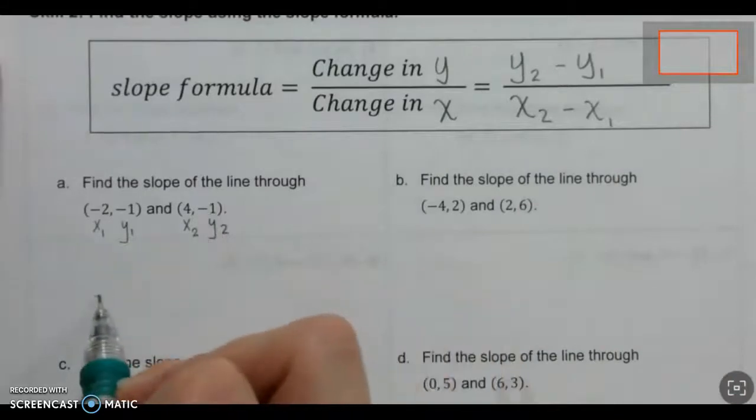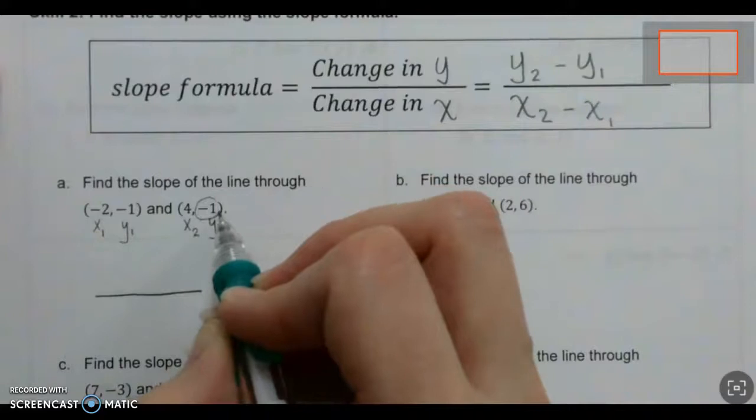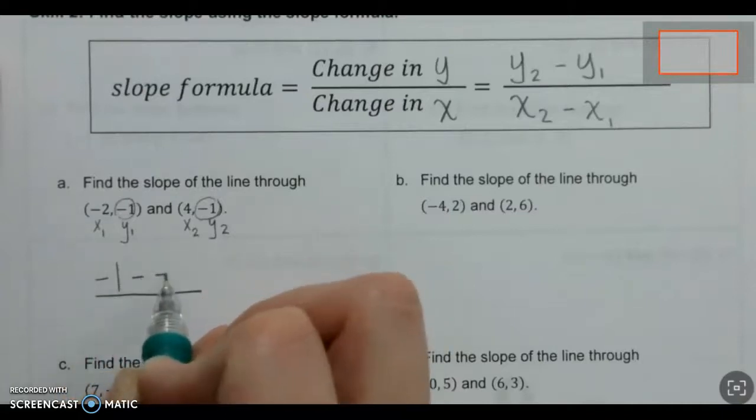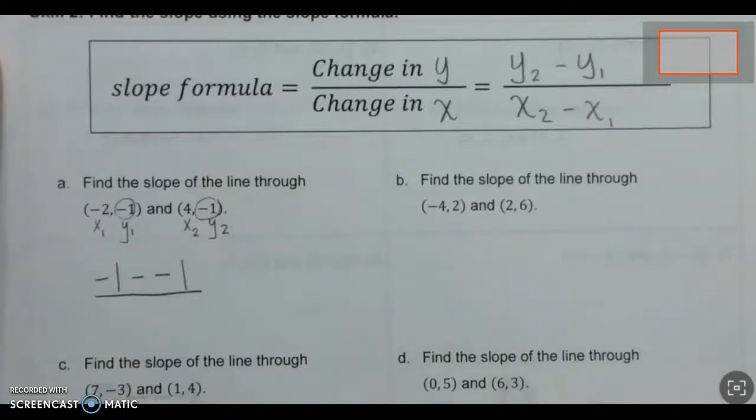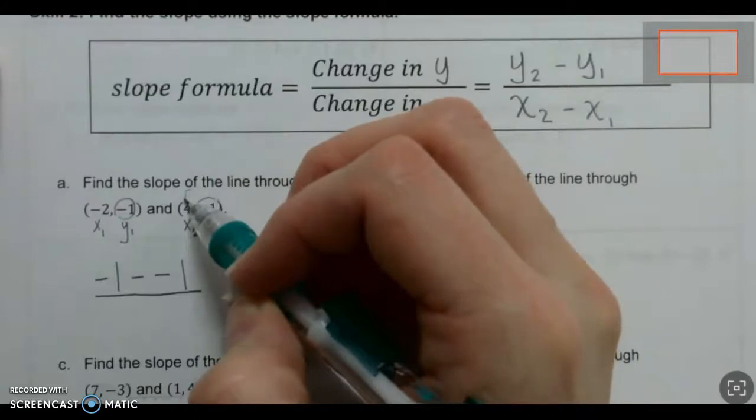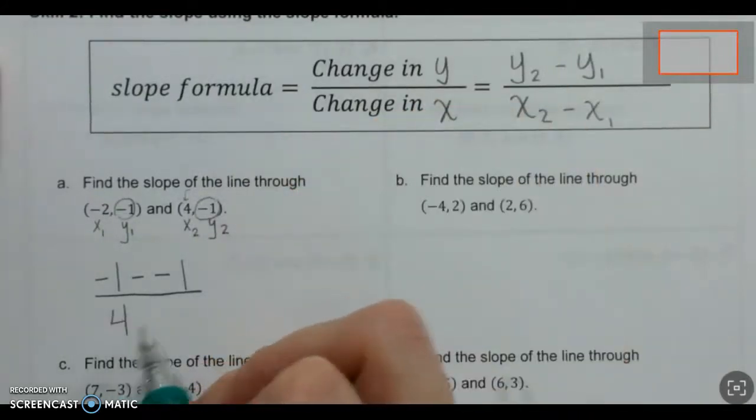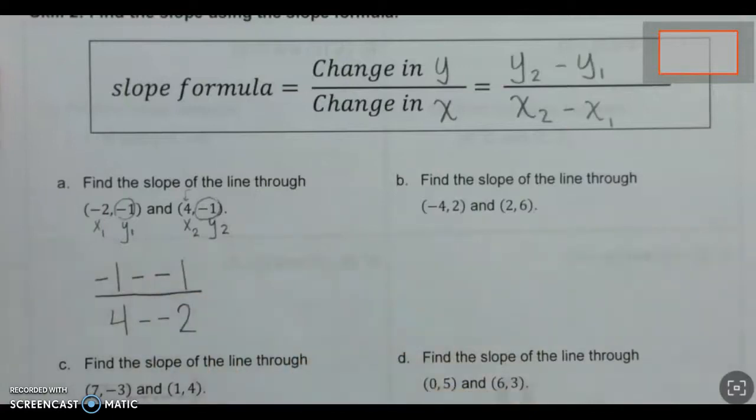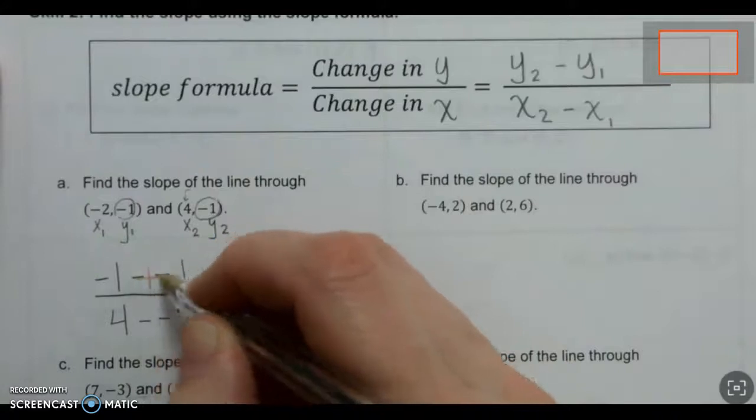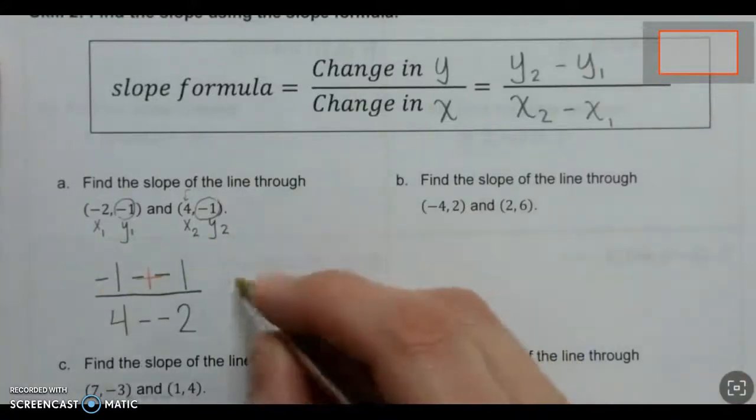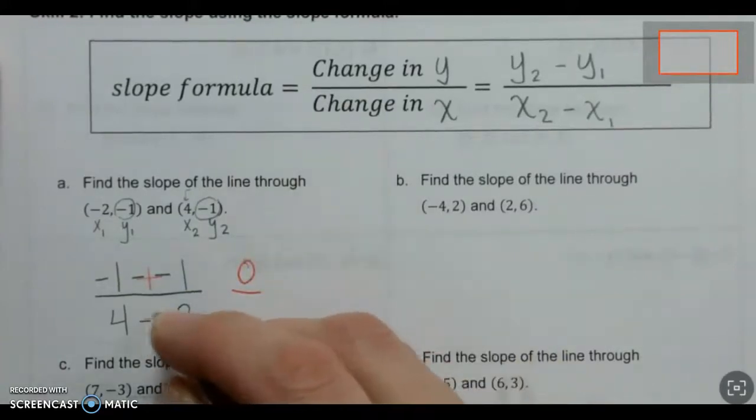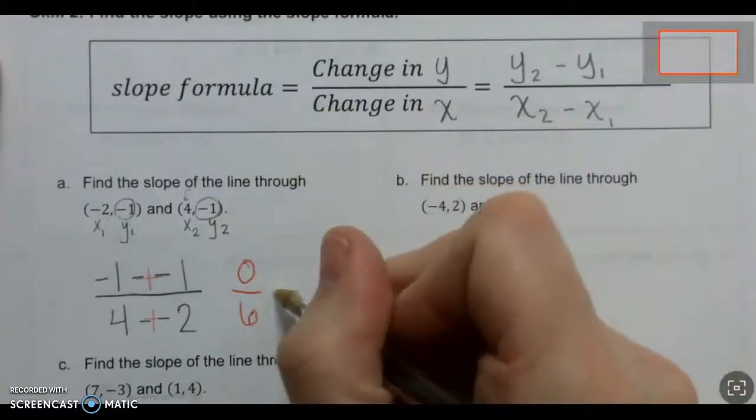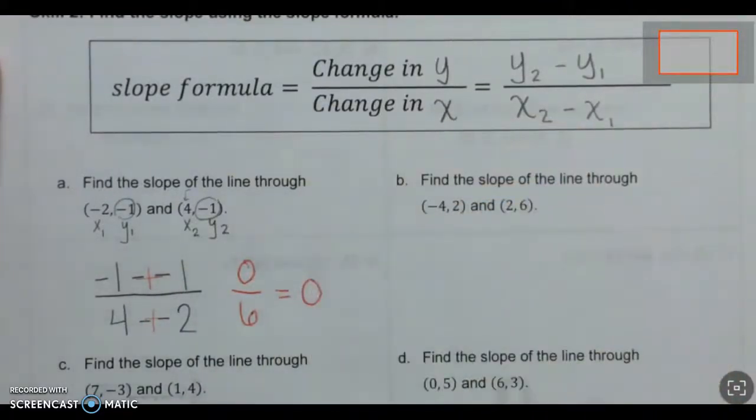Here we go. y2 is negative 1, so let's get our fraction set up. I'll go negative 1 minus negative 1 on the top, and then on the bottom we're going to do the number 4, so our x values come next. The number 4 minus a negative 2. Now minus a negative of course is going to become a plus. So this actually ends up adding these two numbers together. Negative 1 plus 1 is 0 on the top, and adding these two together is 6 on the bottom. If I took a calculator and did 0 divided by 6 to reduce this, that answer would just be 0.